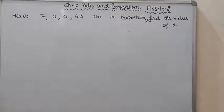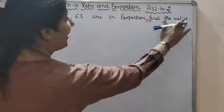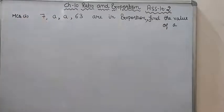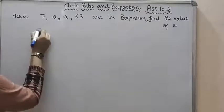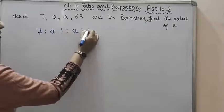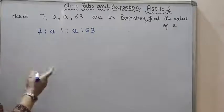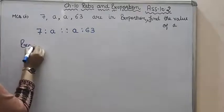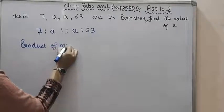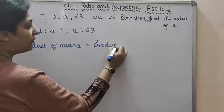Let's take another one. Seven, a, a, and sixty-three are in proportion. Then find the value of a. These four terms are in proportion. So how we will write it? Seven is to a, proportional to a is to sixty-three. So this is the way to write a proportion. Proportion is written. Now we have to find out value of a.